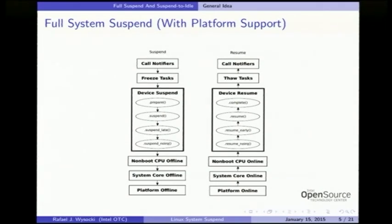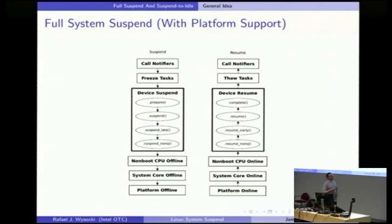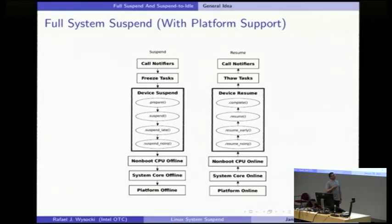That is the system suspend code flow, and this is the system resume code flow — these have to be complementary. All operations here are carried out on the whole system. When I say 'call notifiers,' it's a global thing going through all subsystems that have registered notifiers. Notifiers are for kernel subsystems that want to know when system suspend is going to happen; they can register a notifier for that, and it is called before any other steps.